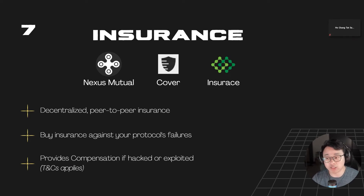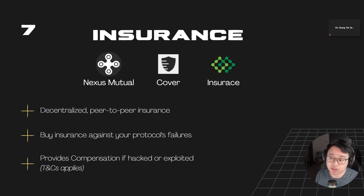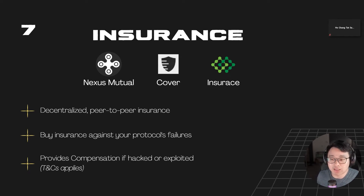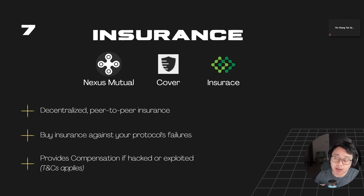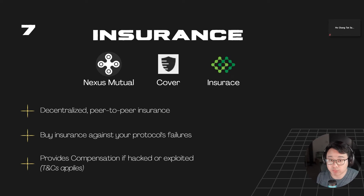Nexus Mutual is the most popular insurance protocol, providing insurance for most top protocols including Anchor Protocol. If you feel Anchor Protocol is risky, you can buy Nexus Mutual insurance, so if there's an exploit and funds are drained, Nexus Mutual may compensate you. One cool thing about DeFi insurance platforms is that they're decentralized and peer-to-peer — a group of people provides the insurance pool, others buy from it, removing the need for a traditional insurance company.